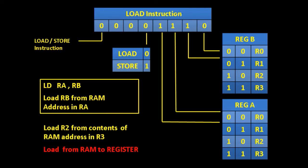Next we look at the load instruction. The load instruction is given by 0, 0, 0, 0, and then we've got a choice of RA and RB. The assembly language is written as LD RA, RB. What this instruction does is load register RB with the contents from the RAM address given in register RA.